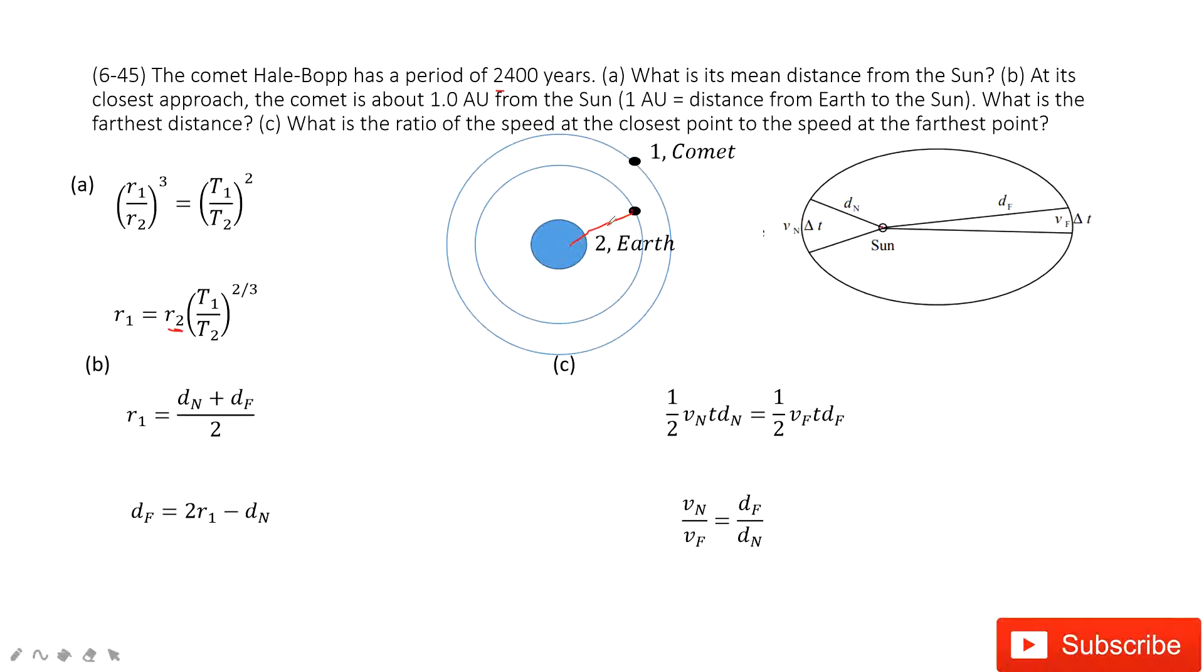By then, we can consider the R1 we just got is the average distance from this comet to the Sun. Do you agree? So the distance, the average distance from the Sun to this comet, should include 2 parts: dn plus df divided by 2 equals the average distance.